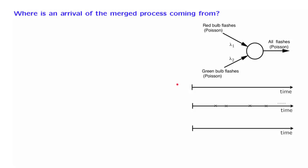As before, we have a red Poisson process and a green Poisson process. We merge these two processes, and we only observe the merged process. Here's an interesting question. This is an arrival of the merged process. Where did it come from? Is it red or is it green?